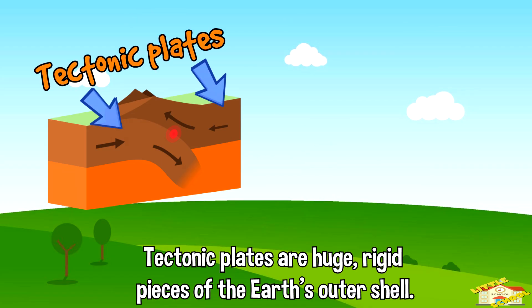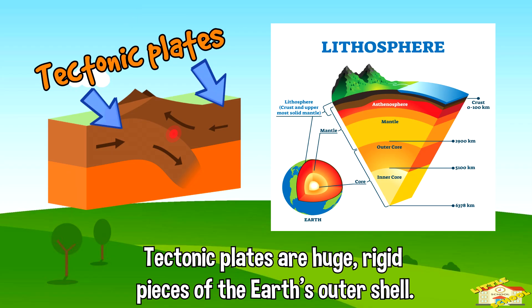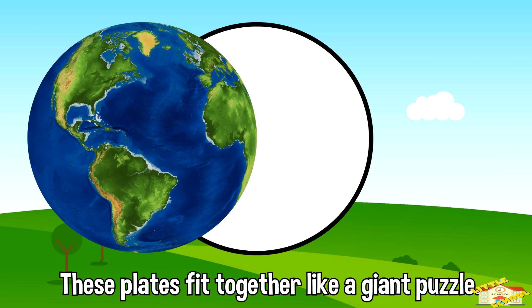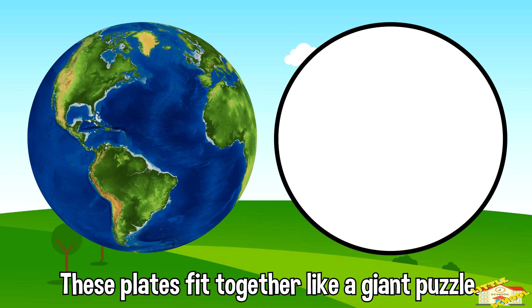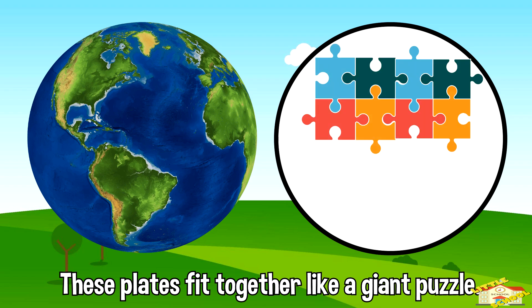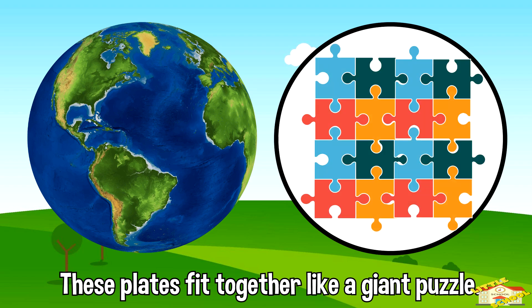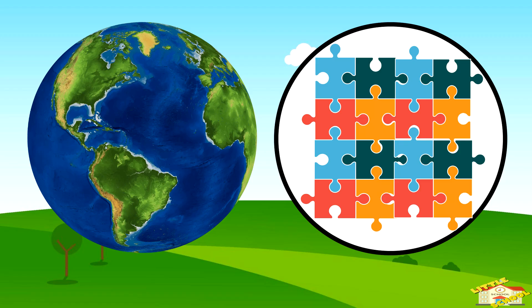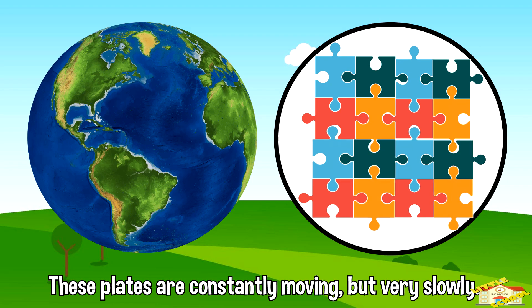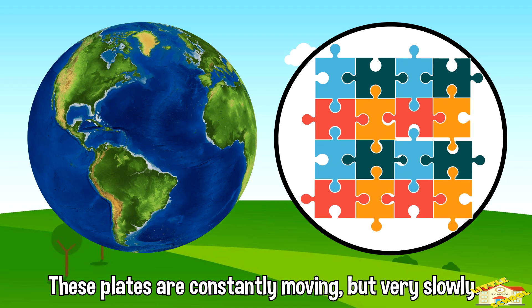Tectonic plates are huge rigid pieces of the earth's outer shell called the lithosphere. These plates fit together like a giant puzzle covering the earth's surface. These plates are constantly moving, but very slowly.